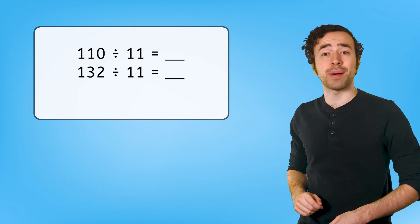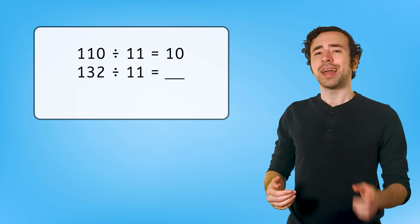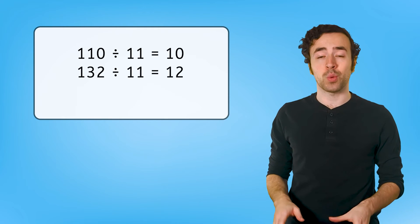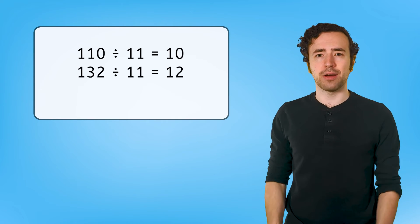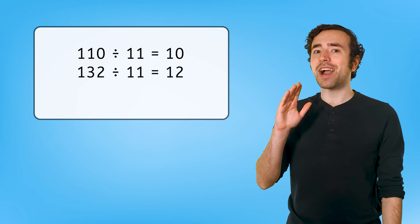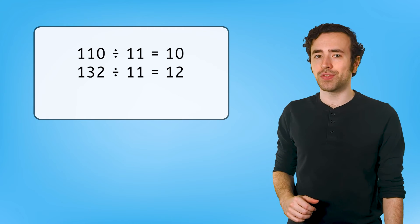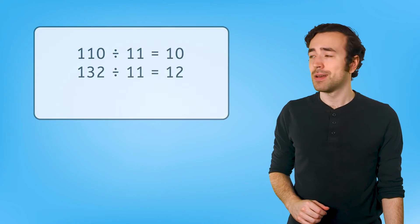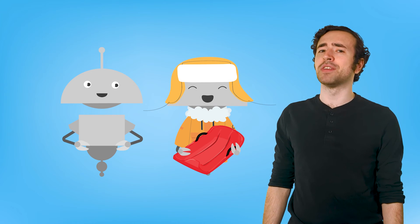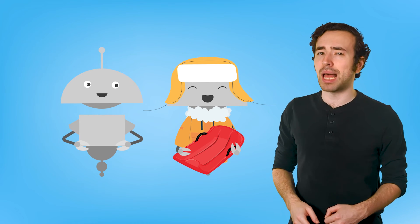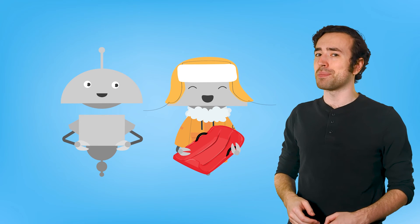110 divided by 11 equals 10, and 132 divided by 11 equals 12. Fact families, patterns, skip counting partial products. We have so many strategies to choose from when solving problems. So, what have we learned today besides the fact that Bevan's brilliant at breaking down 11s and supplying snowy weather sports equipment?